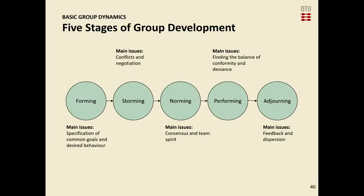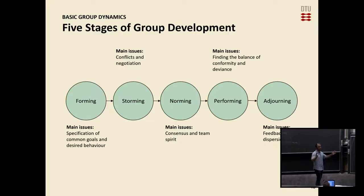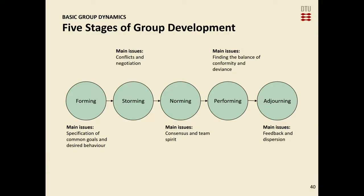This is the process you've been through in the group forming process. You start by forming — coming up with common goals. Then there's a storming phase: conflicts, negotiation, who's doing what. Then you develop norms, consensus, team spirit, and then you perform. And then, of course, you turn in your assignment, the group dissolves, and you adjourn the project. Those are the five stages in a group.